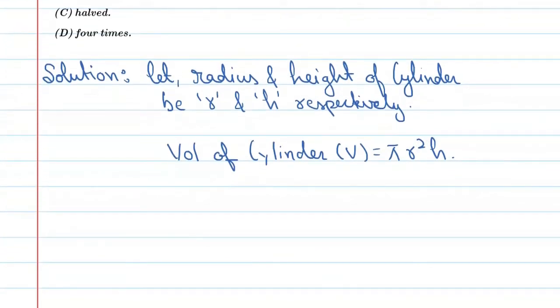But according to question, what do we have to do? We have to double the height and radius has been made half. So let new radius be r prime.